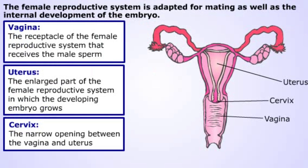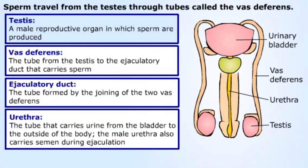The female receptacle that fulfills this purpose is called the vagina. In female mammals, a chamber called the uterus connects to the vagina through a narrow opening called the cervix. The uterus is the place where the embryo develops.